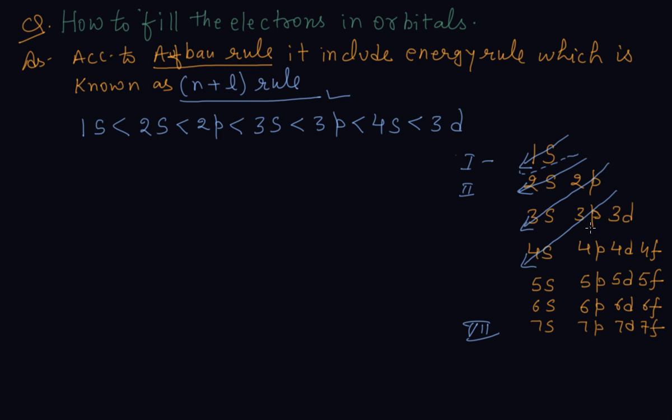After 3p, why doesn't the electron go to 3d but instead goes to 4s? Because the energy of 4s is less than 3d. How do we calculate this?